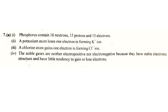Question 2: A Potassium atom loses 1 electron in forming the K+ ion. Question 3: A Chlorine atom gains 1 electron in forming the Cl- ion.